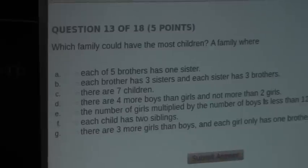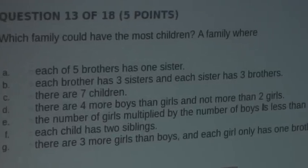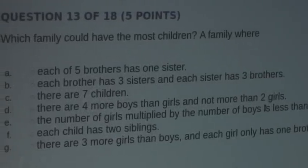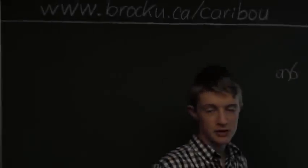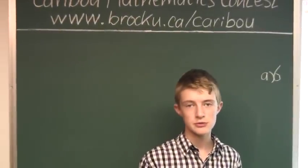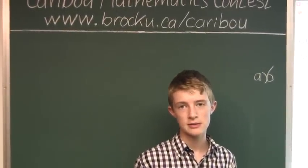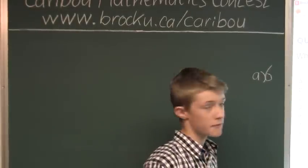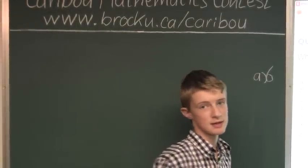So now let's look at B. Each brother has three sisters, and each sister has three brothers. So if there are three sisters and three brothers, so three girls and three boys, that means there are six children again in this family, so that means B is six.